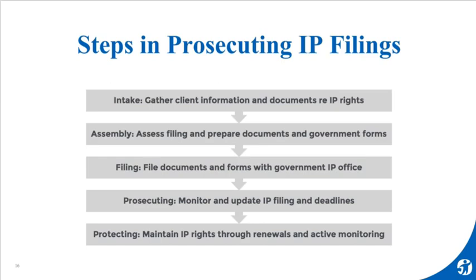Let's talk about what's required in prosecuting an intellectual property filing. At the very first initial step, you have to gather information from a client — all the documents, whether that's information about prior art if you're filing a patent, or information about specimens and how they're using their trademark. Next, you assess all that information and prepare applications based on it, then file through government IP offices. Many attorneys continue to monitor and update that IP filing, keeping track of key filing dates for clients. Optionally, you also want to protect your client's IP rights through renewals and active monitoring of potential infringements — a great way to increase revenue.